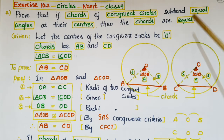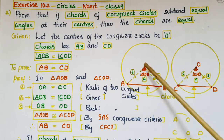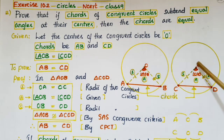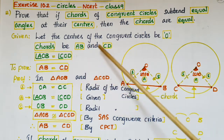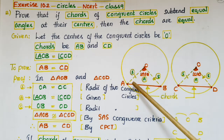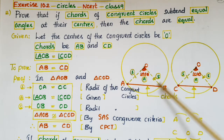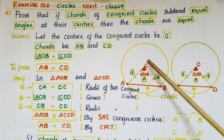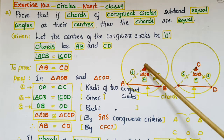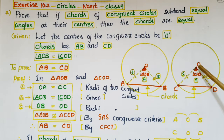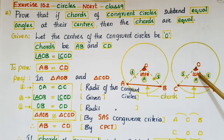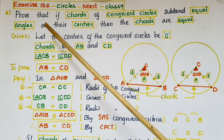Let the centers of these two congruent circles both be O. We know that congruent circles means the radii of the two circles are equal. Let the chords be AB and CD — these are the chords of the two circles. The angle subtended by chord AB at center O is angle AOB, and the angle subtended by chord CD at center O is angle COD.